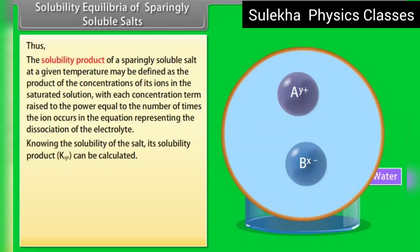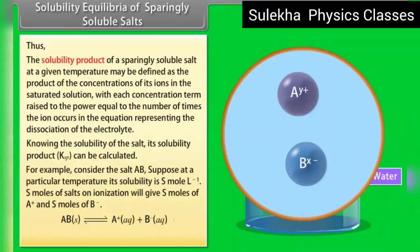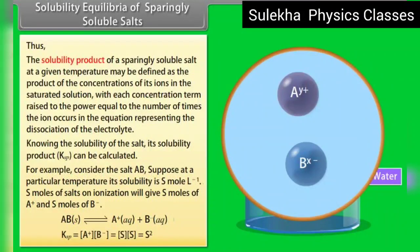Knowing the solubility of a salt, its solubility product can be calculated. For example, consider the salt AB. Suppose at a particular temperature its solubility is S mol L⁻¹. S moles of salt on ionization will give S moles of A+ and S moles of B−. Therefore, Ksp = [A+][B−] = S × S = S².